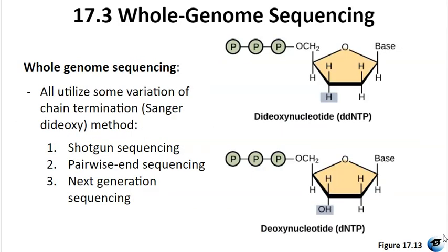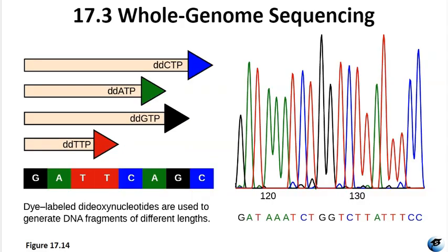The application of whole genome sequencing has revolutionized the field of medical sciences. This technique involves determining the complete DNA sequence of an organism's genome. Whole genome sequencing serves as a powerful tool for investigating the genetic basis of various diseases, allowing scientists to analyze an individual's entire genome and identify potential disease-causing genetic variations. Various methods are employed, but all of them incorporate some variation of the original chain termination or Sanger dideoxy sequencing method.